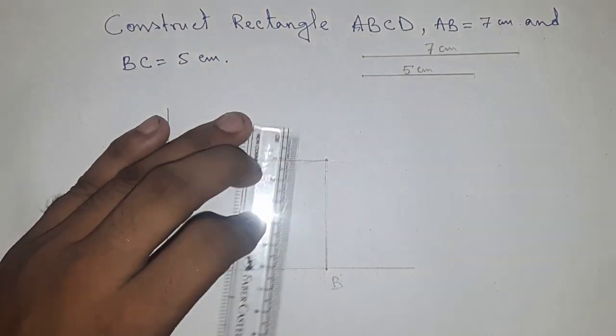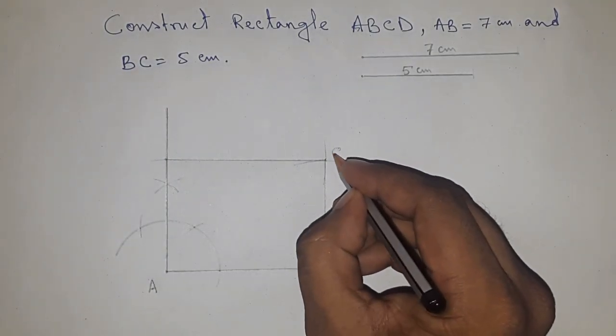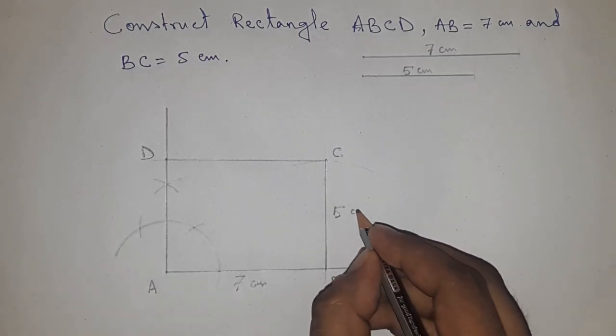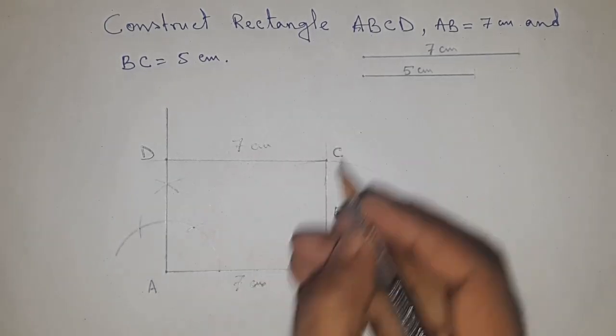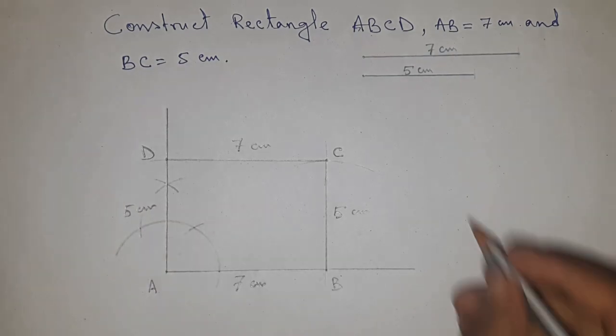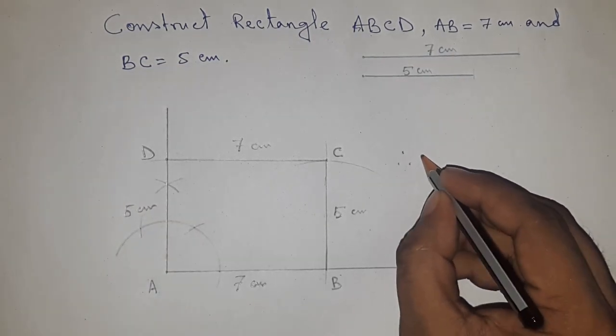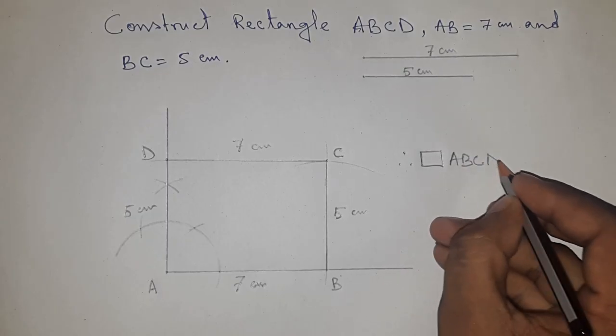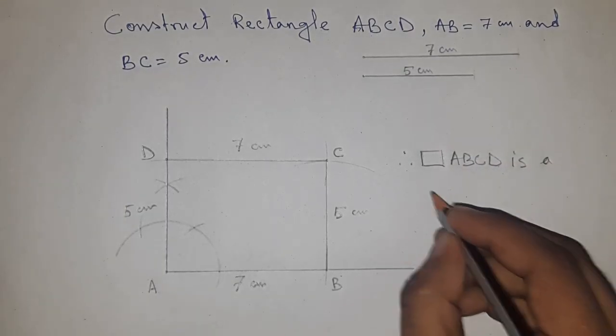Joining this. So this is point C and this is point D. ABCD is a rectangle with sides 7 centimeters, 5 centimeters, 7 centimeters, and 5 centimeters. Therefore, ABCD is a rectangle with sides 7 centimeters and 5 centimeters.